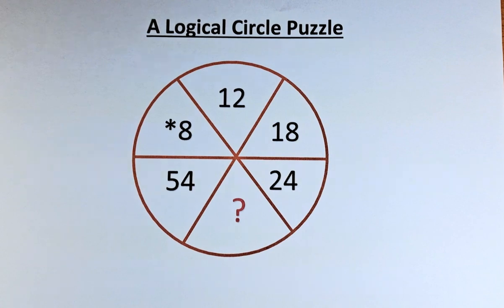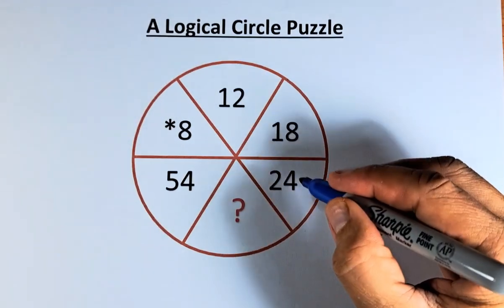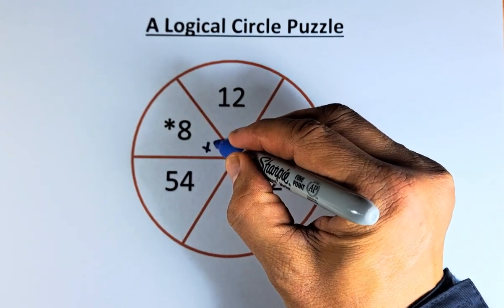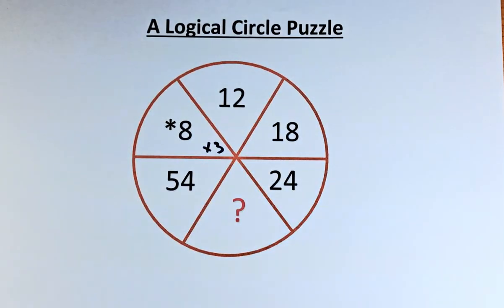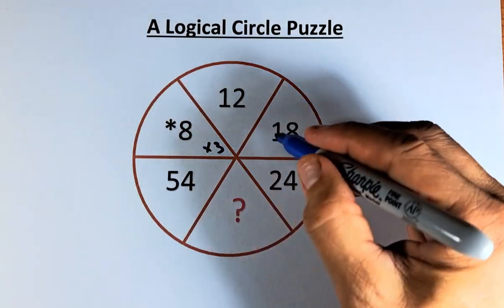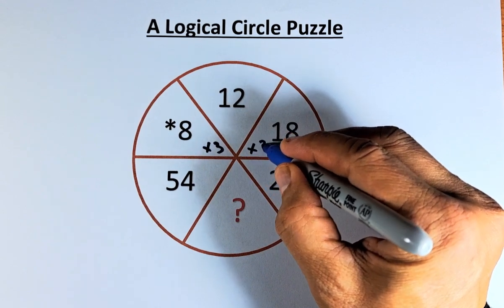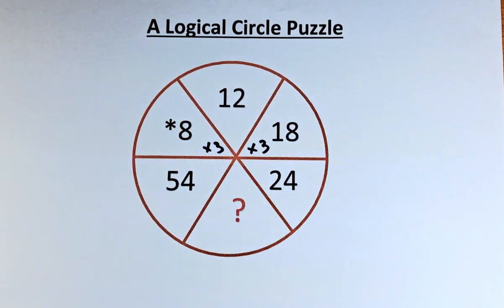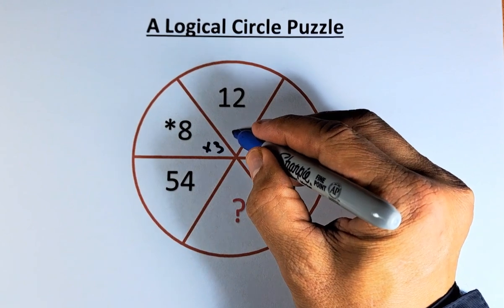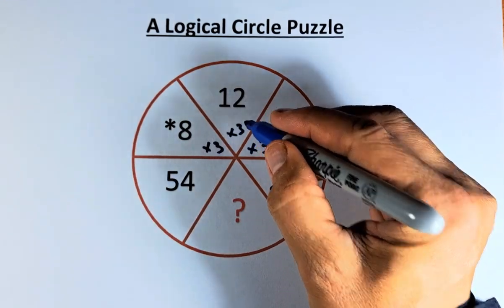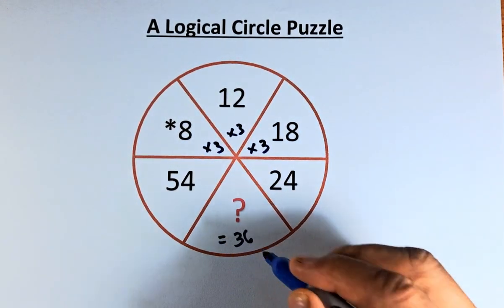The idea of this puzzle is that it is the opposite number. So to get 8 to 24, you multiply by 3. Similarly, to get 18 to 54, you also multiply by 3. So to get the question mark, you multiply by 3. So 12 times 3, question mark, equals 36.